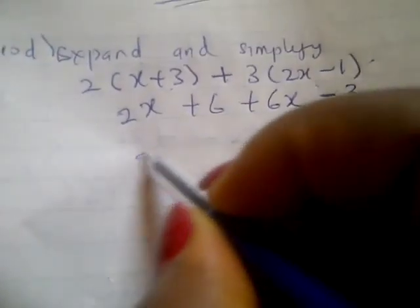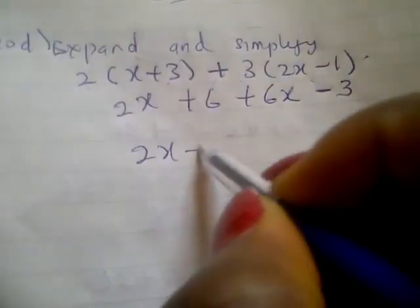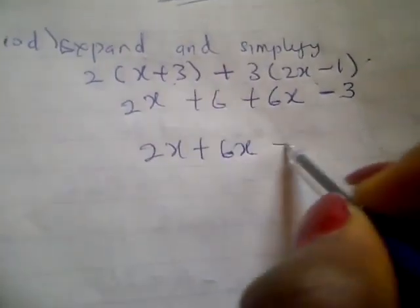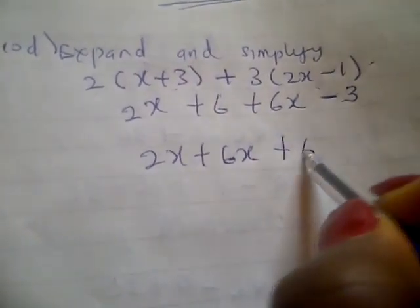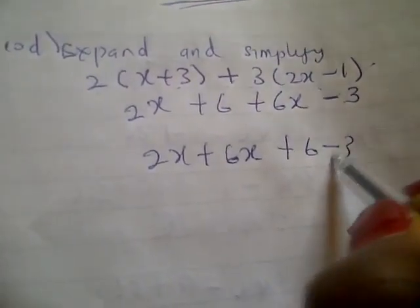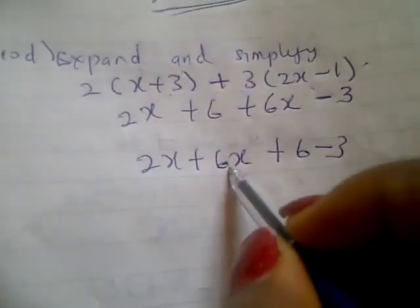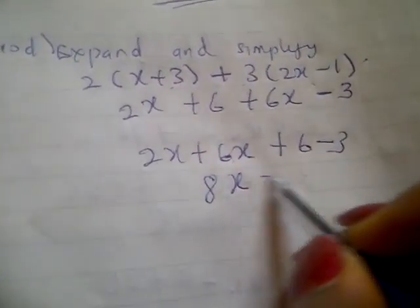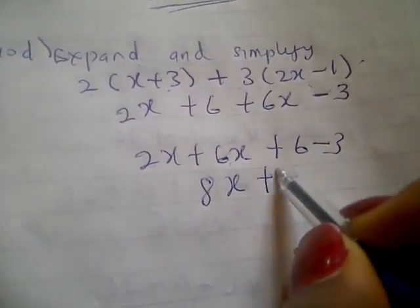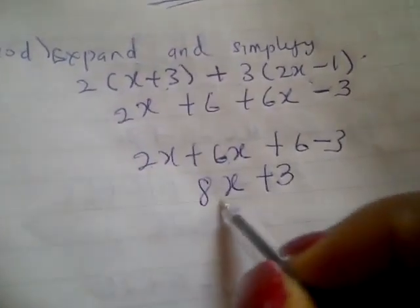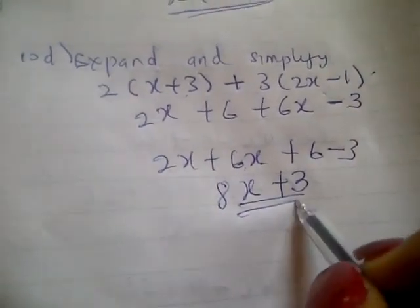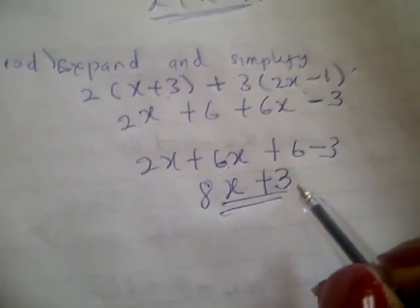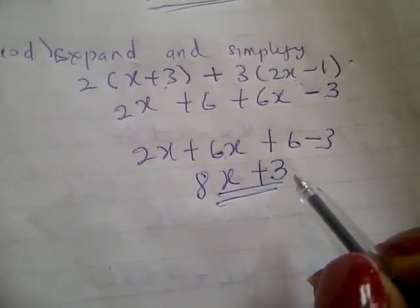Collecting like terms: 2x + 6x + 6 - 3. 2x plus 6x is 8x, and 6 minus 3 is 3, giving a final answer of 8x + 3. That's the full simplification.